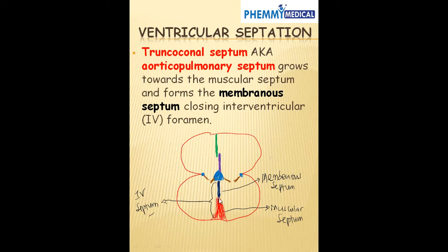Looking at this diagram, we can see the muscular septum. The aorticoconal septum grows towards the muscular septum, thereby forming a membranous septum. Both the membranous septum and the muscular septum together make up the intraventricular septum. The endocardial cushion also helps to complete the formation of the membranous septum.